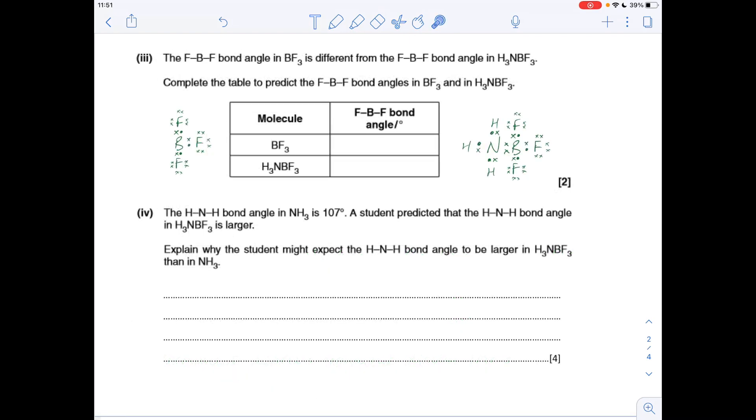Next part of the question, we've got to come up with the FBF angle in both of those molecules. You'll notice I've drawn up two dot and cross diagrams, and once you've got that, you can see how many electron regions you're dealing with around the central atom. In the BF3 molecule, you've got one, two, three electron regions, so they're all bonding regions. Repulsion's equal, and so the angle will be 120 degrees. In the other molecule, you'll notice because of this dative covalent bond between the N and the B, we've now got four electron regions around there. They're all bonding regions, so they will repel equally, and you get the 109.5 degree angle.